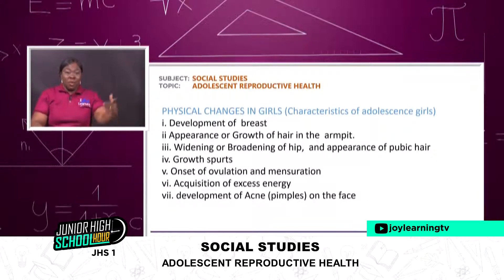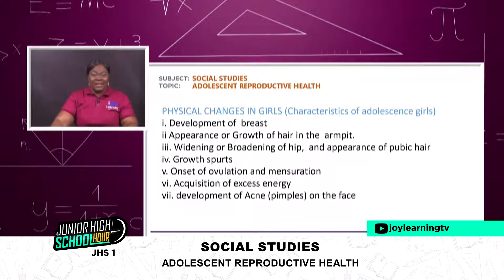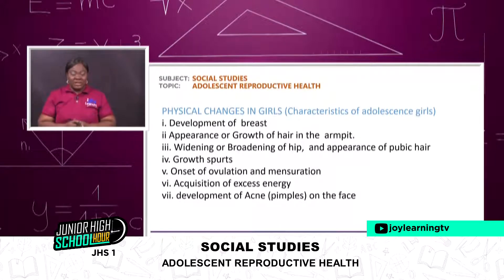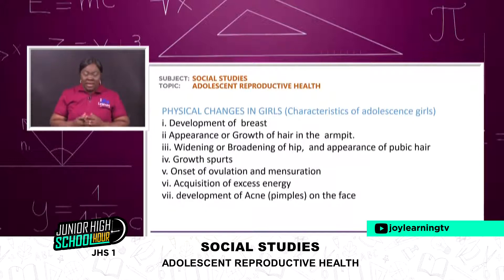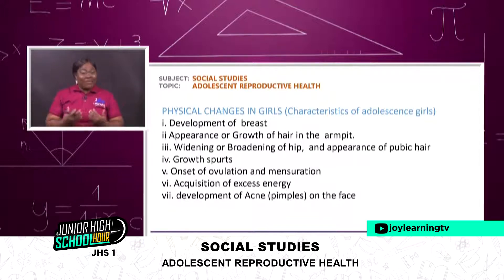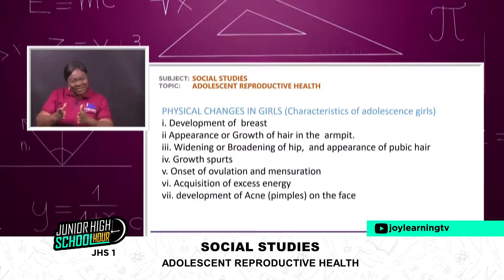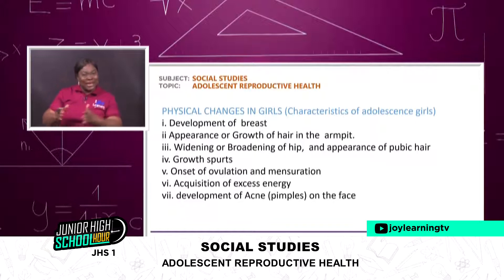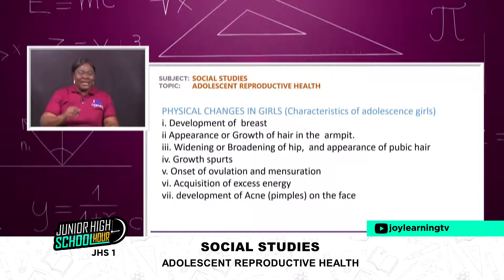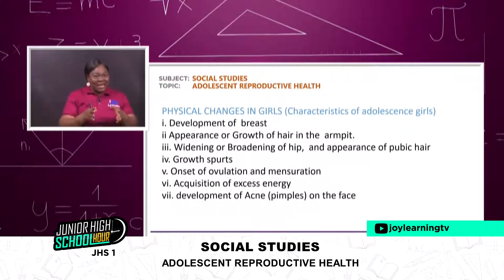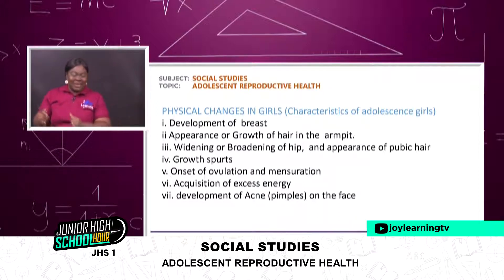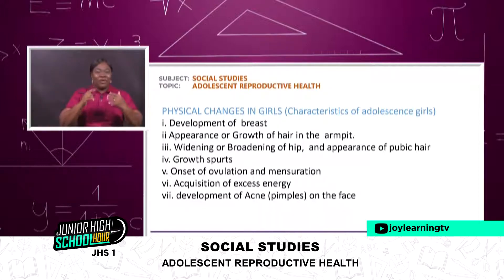Now let's look at the characteristics of adolescence in girls — the physical changes in girls. Number one: development of breasts. I have gone through that stage, having passed gradually through the 10 to 19 years. So you see that if you have not got there yet, one day you will get there, or maybe at the moment you are in that transition. So let's look at it — development of breasts.